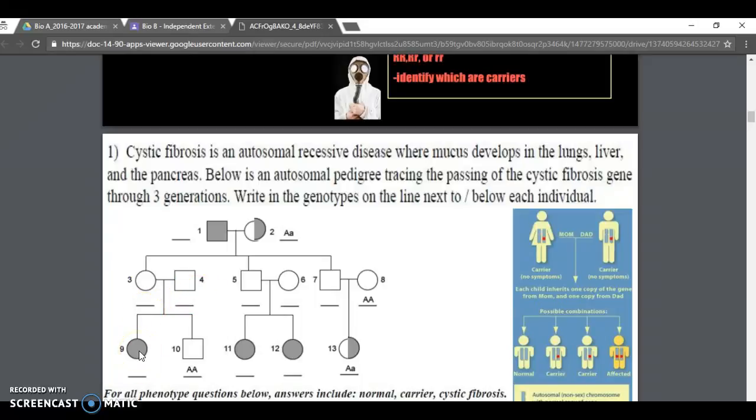Figure out based on the kids what do these parents have. The kids really tell you a story. This child has the disease, cystic fibrosis. They inherited it from their parents. If they're fully shaded in, it means they're little a little a.